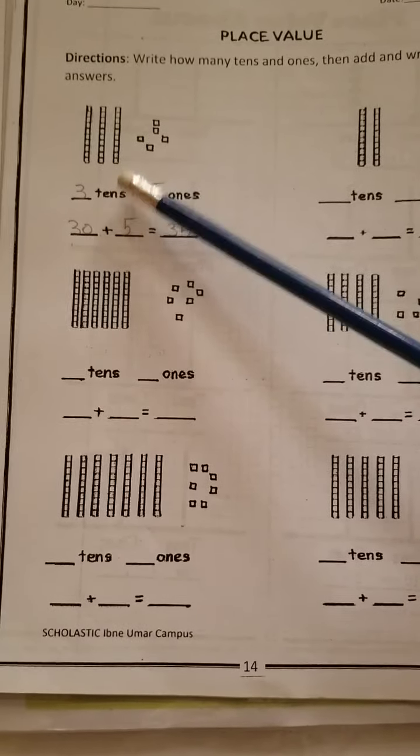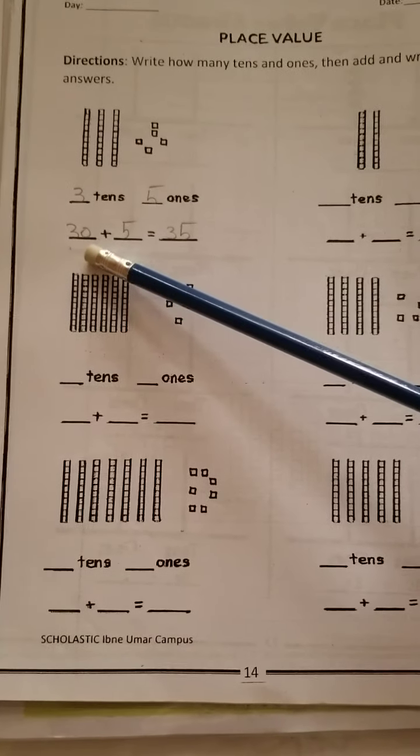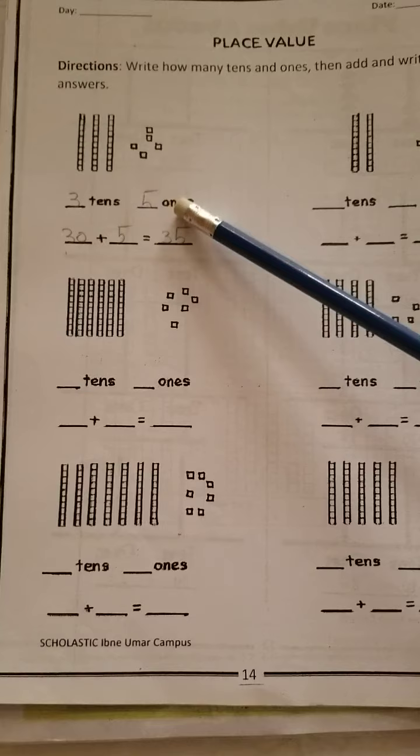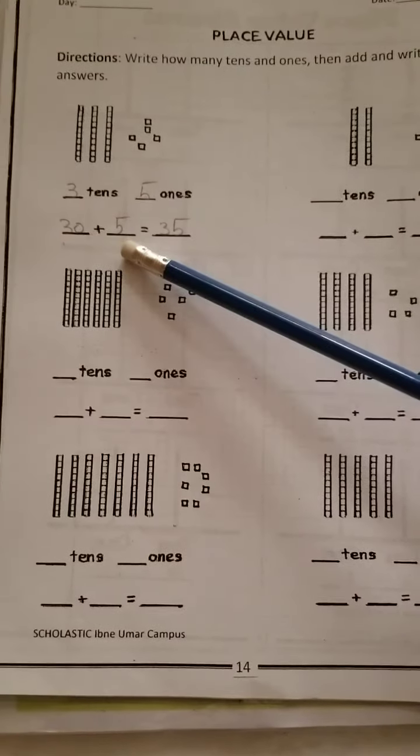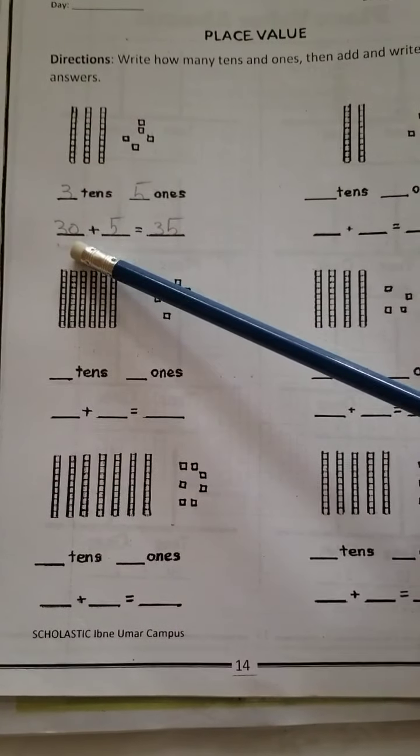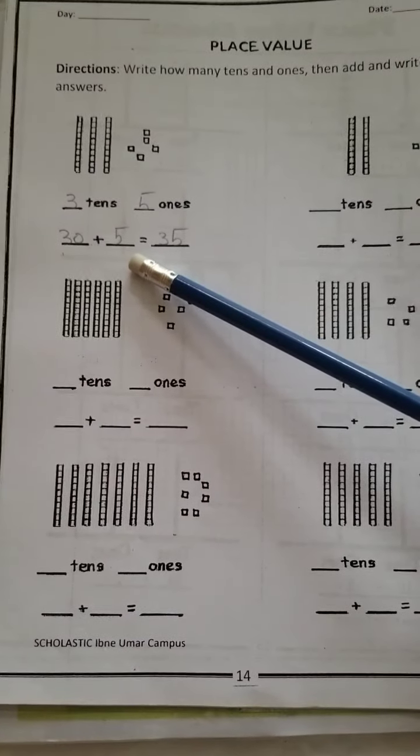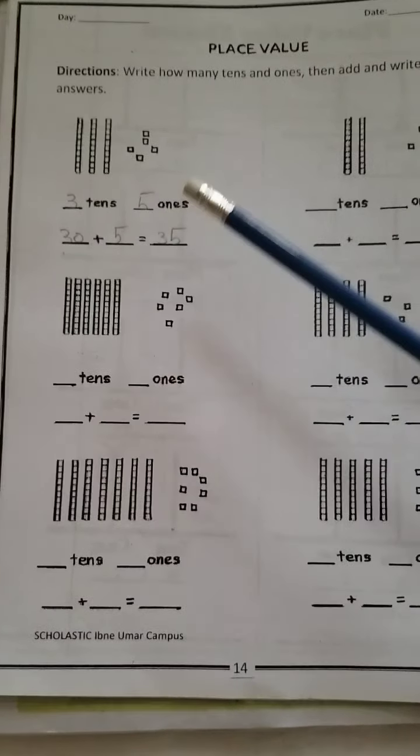Now how many units? One, two, three, four, five. So I have written five here. And you already know that ones and units mean the same thing. You can call it ones, you can call it units. Both will be correct. So if three is at the place of tens, its value is thirty.